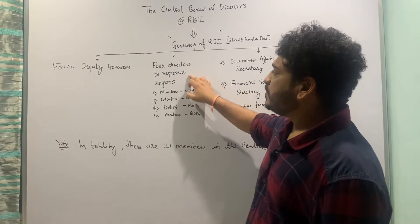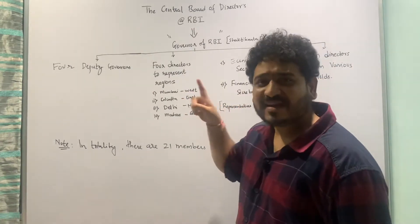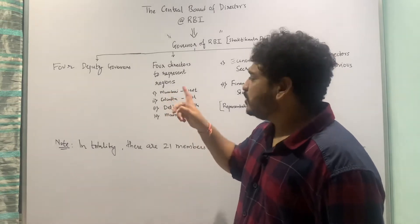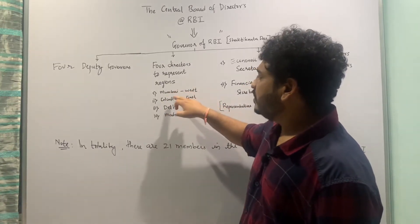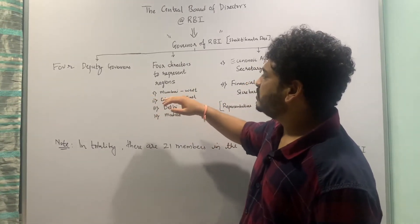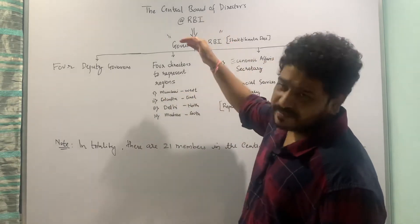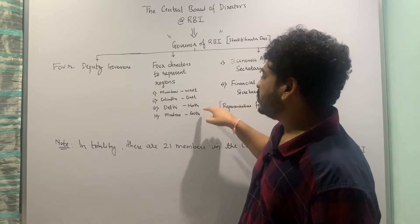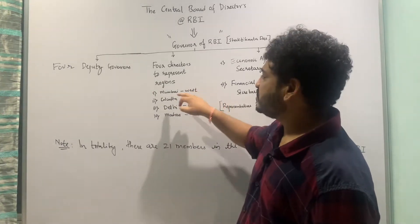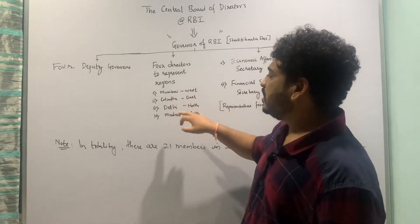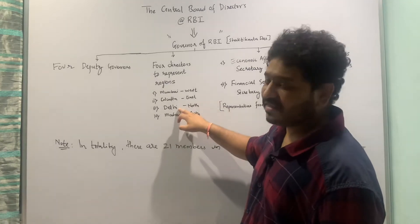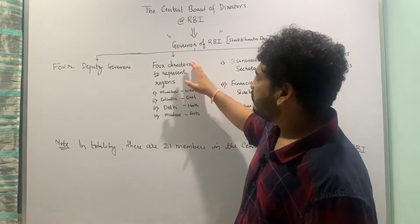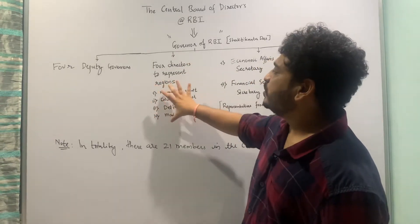Furthermore, there are four directors to represent the four regions. As I mentioned in the previous lecture, there are four regions assisting the Reserve Bank of India headquarters — West, East, North, and South respectively. In the West it is Mumbai, then East is Kolkata, then we have North which is Delhi, and then we have Madras in the South. So the four directors are representing these four regions.